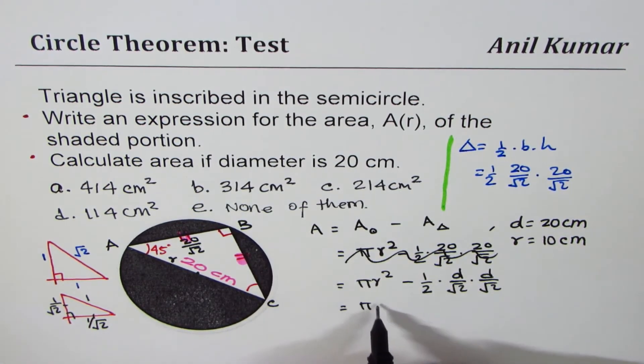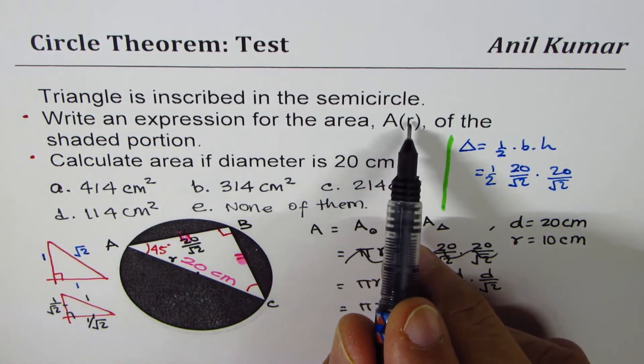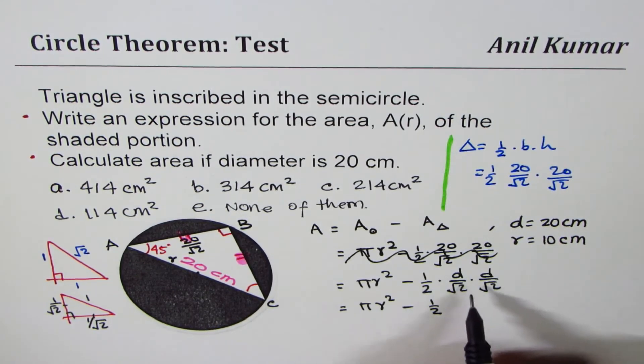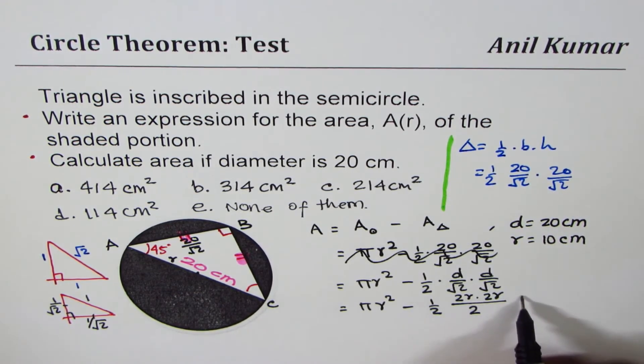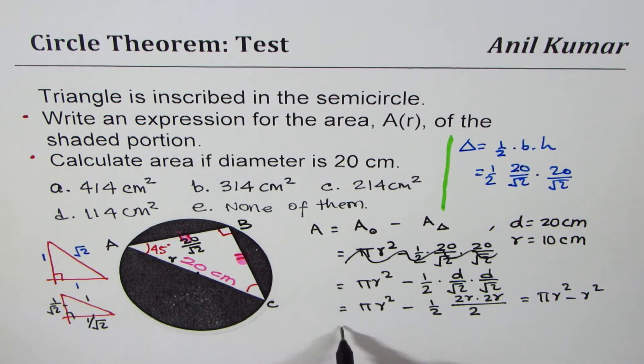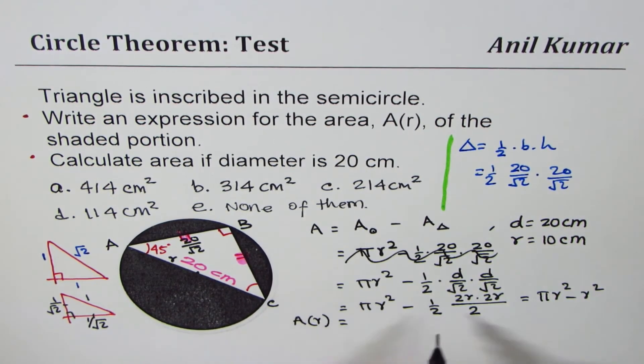So which should be equal to pi r squared. We want function in r. Diameter is 2r. So we can write this as minus half. Now square root 2 times square root 2 is 2. And for diameter, I'll write 2r times 2r. So these 2s cancel off. We are left with r squared. So we'll get pi r squared minus r squared. Or we can say area in terms of radius is r squared is common. Pi minus 1. So that becomes the expression for area.